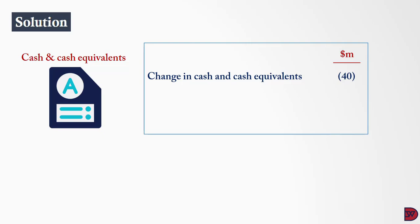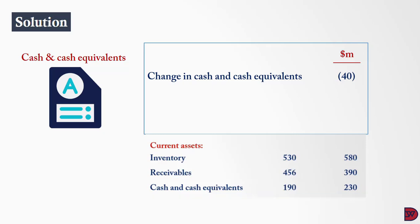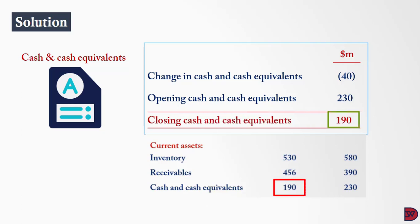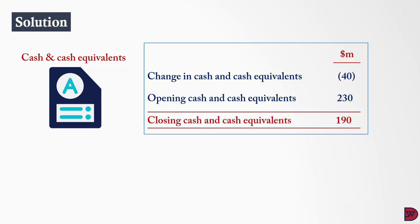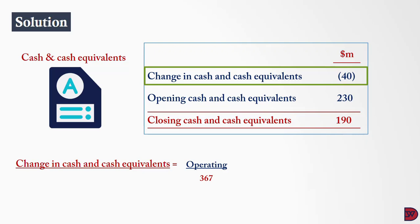The net change in cash and cash equivalents is an outflow of 40 million dollars — the prior year balance is higher than the current year by that figure. Adding the opening cash of 230 million gives the closing cash of 190 million. As a check, the sum of operating activities (367 million inflow), investing activities (622 million outflow), and financing activities (250 million inflow) equals a net outflow of 40 million dollars, confirming everything is correct.